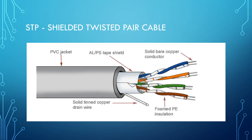This slide shows the construct of the shielded twisted pair cable. The 4 pairs of color-coded wires are inside an aluminum foil providing shielding from EMI — electromagnetic interference — which then goes into a PVC jacket to protect the entire cable.